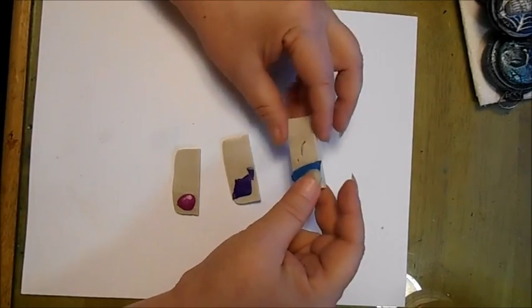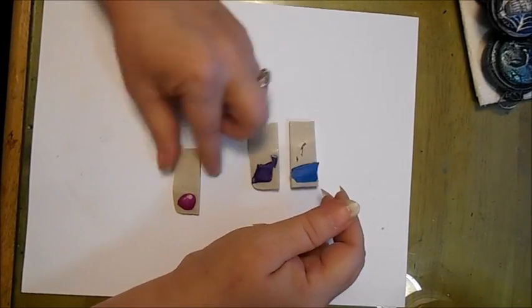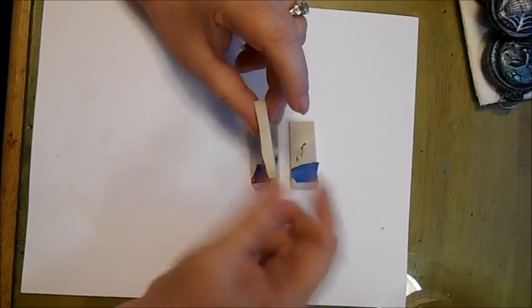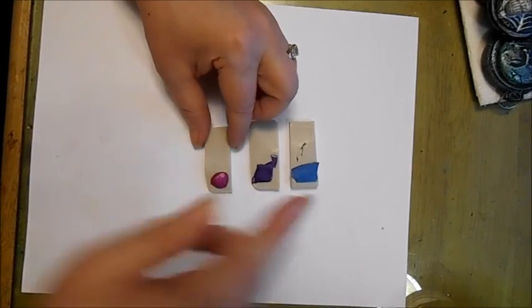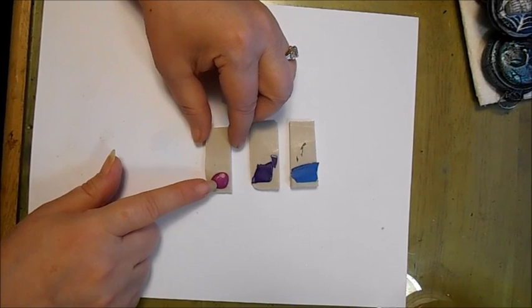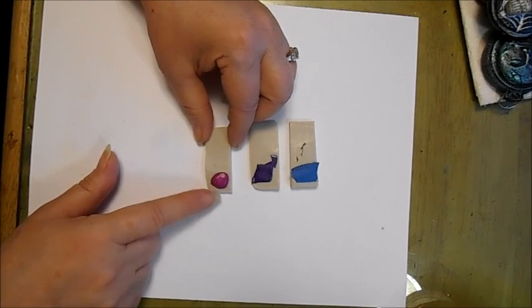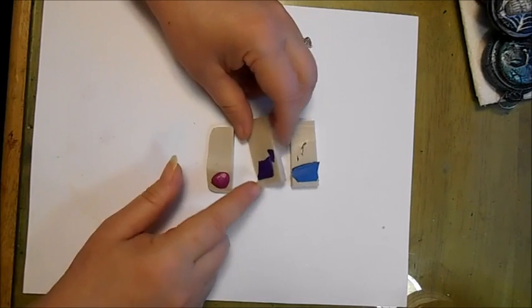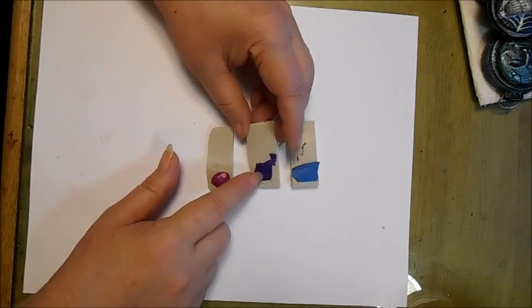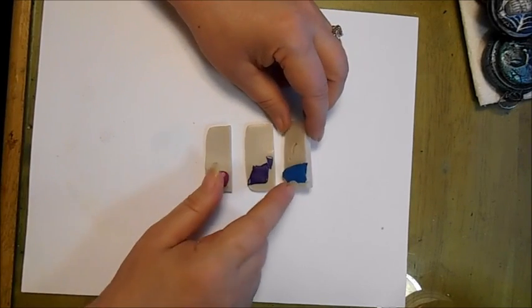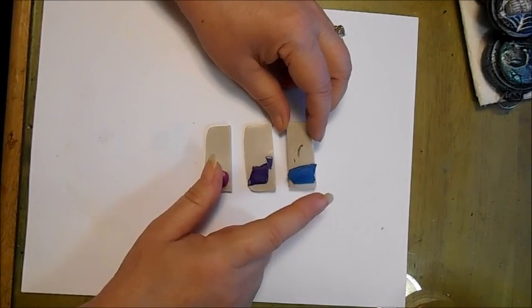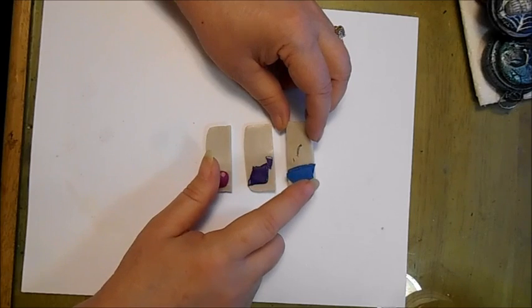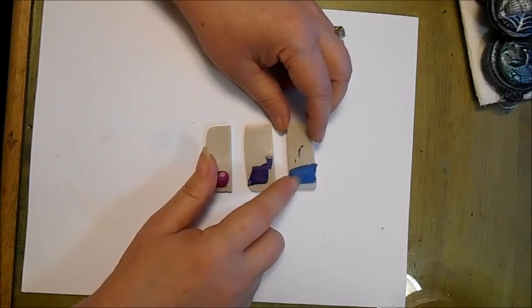I'm starting with three relatively equal portions of the Pearl Primo. This one has Primo Fuchsia, just a tiny bit. This one is the Primo, I believe it's just purple. And this one is the Souffle, and I believe it's the Lagoon.